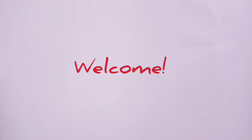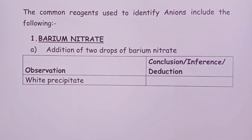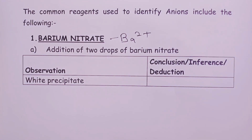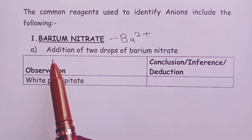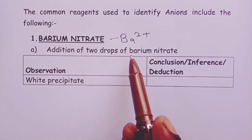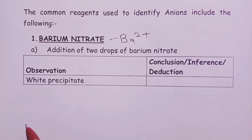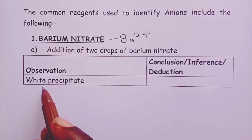The first reagent is barium nitrate. Barium nitrate simply introduces barium ions into your unknown solution. When we are provided with barium nitrate, it can be accompanied by three different instructions to the candidate. The first instruction involves addition of two drops of barium nitrate — just plain barium nitrate — and we expect an observation of white precipitate.